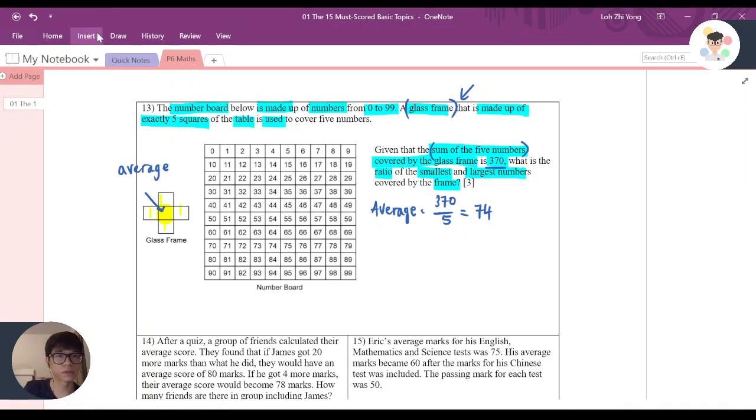For example, let's just try it out. For example, if I cover here, 10, 11, 12, 1, and 21. Let's try it. Is 11 really the average of these 5 numbers? Let's try it. Let me just get my calculator.